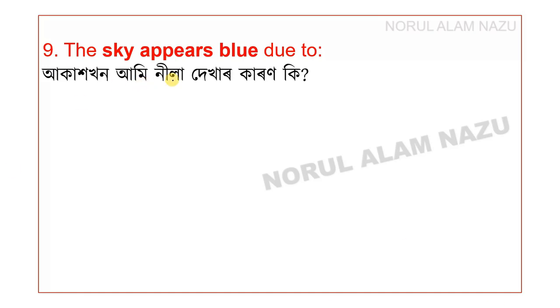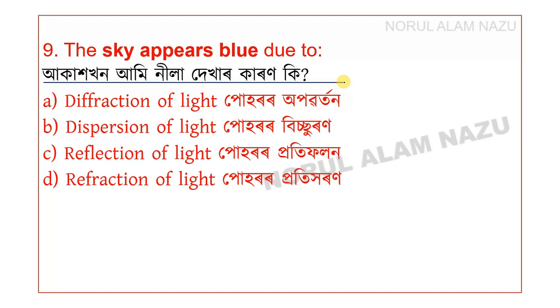The sky appears blue due to the scattering of light. The phenomenon responsible is the dispersion of light.